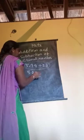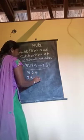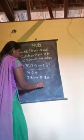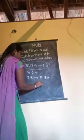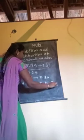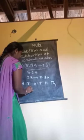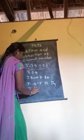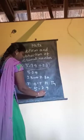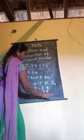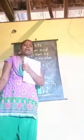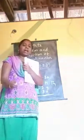5.29 stays as is. 2.3 is converted into 2.30. After addition, we use the place value chart: ones, tenths, hundredths. Just like with unlike fractions where we need a common denominator, with unlike decimals we must first convert to like decimals before adding.